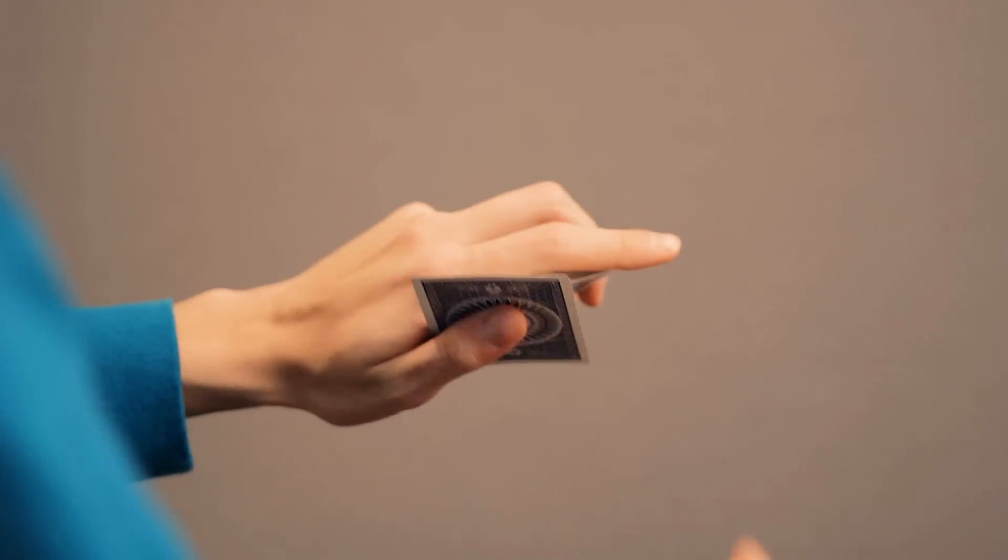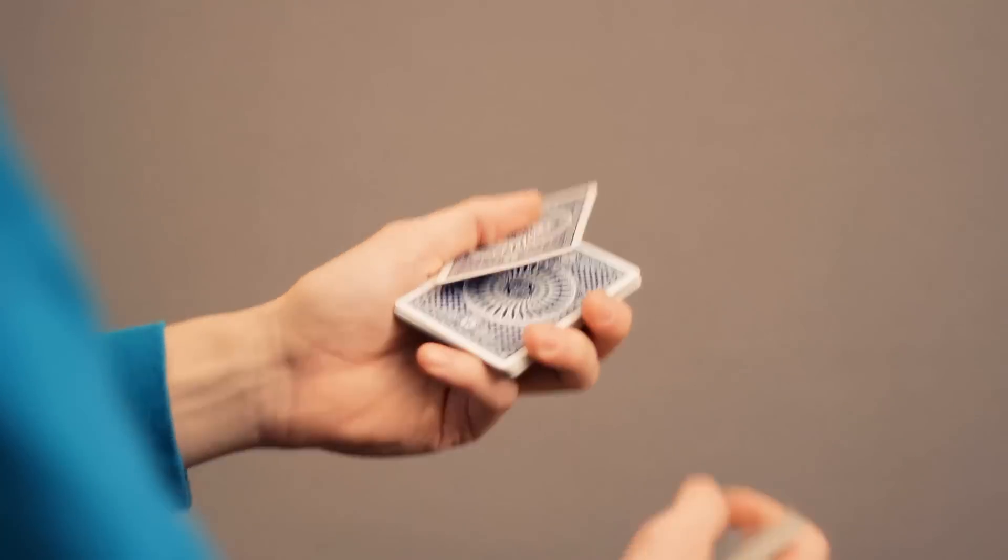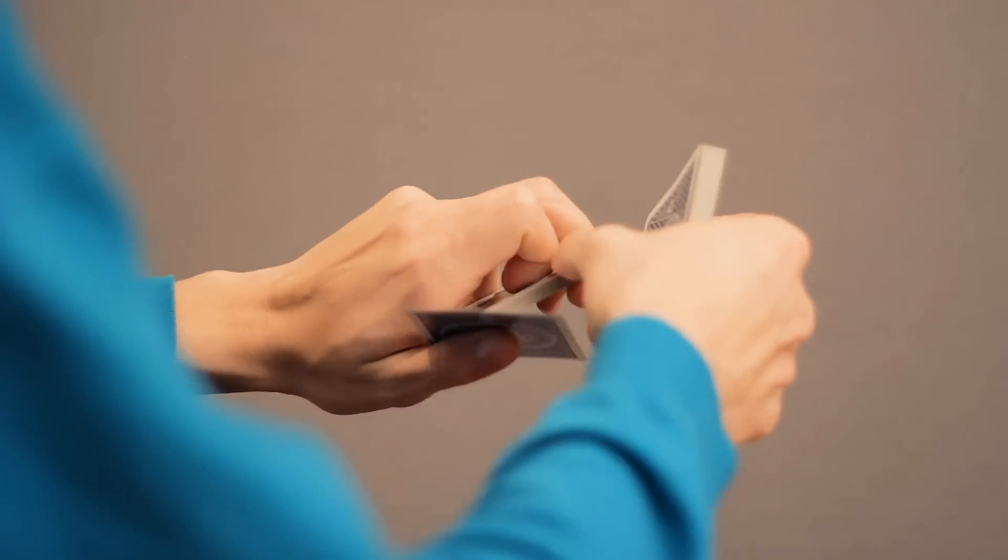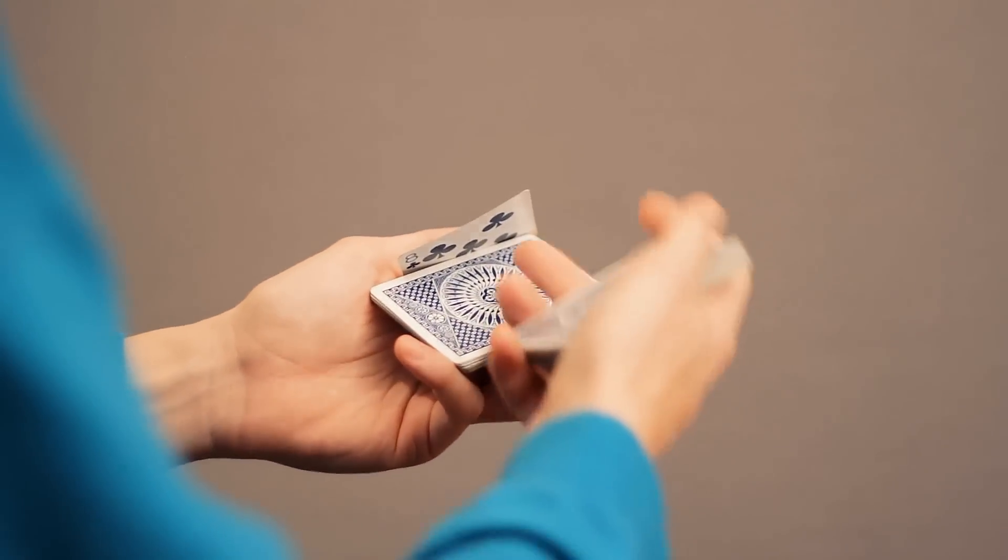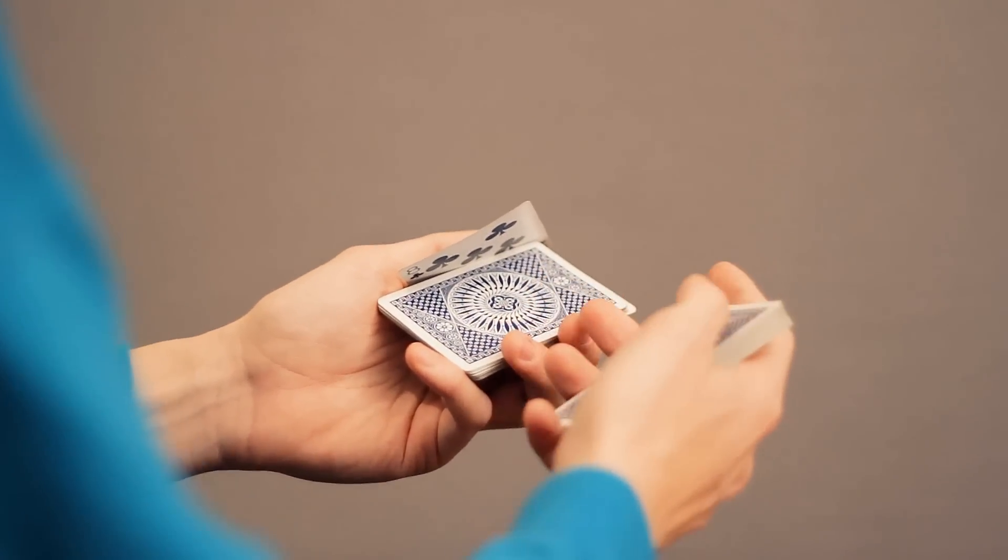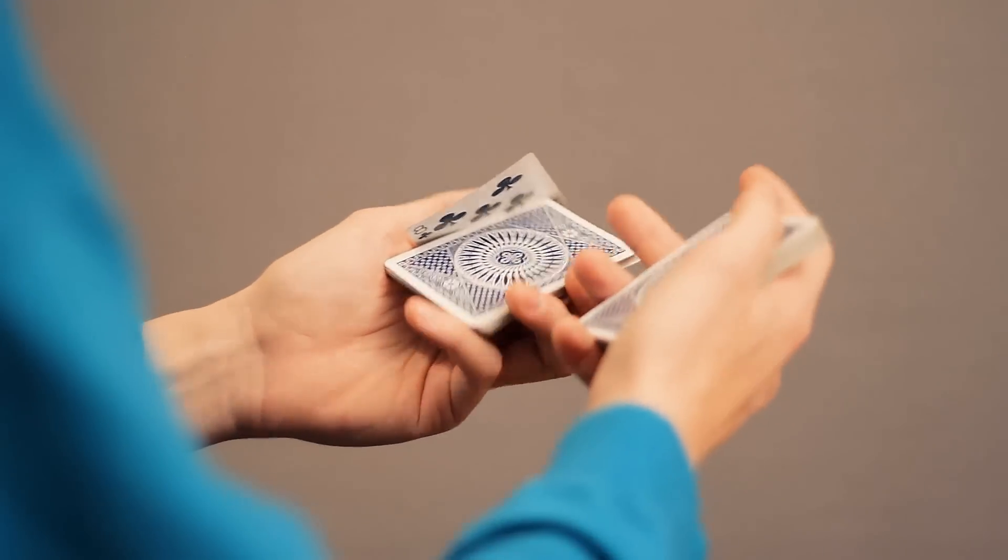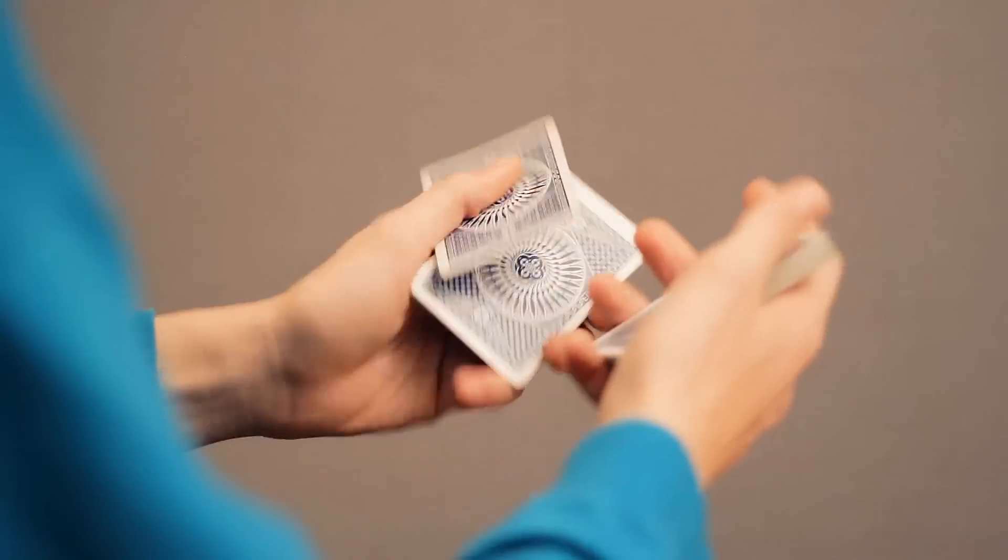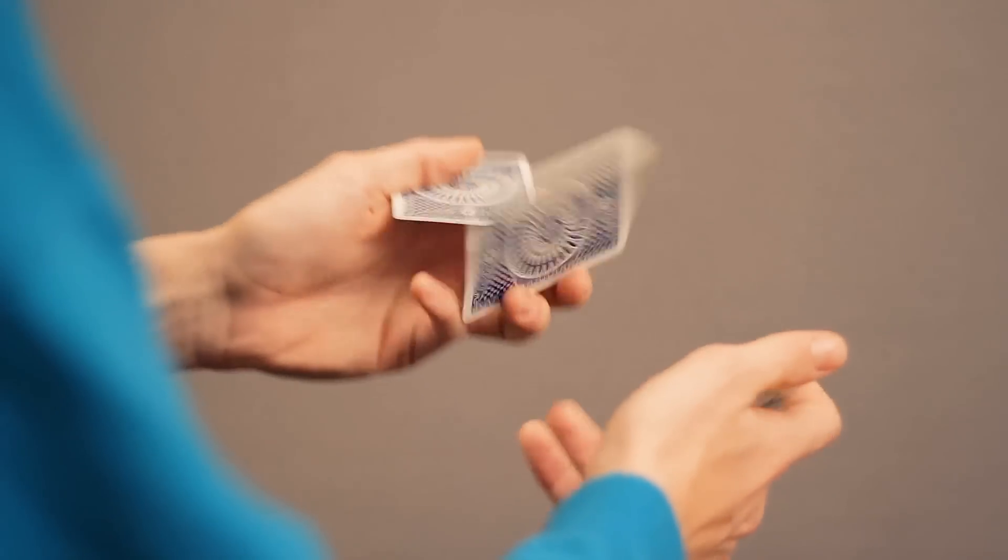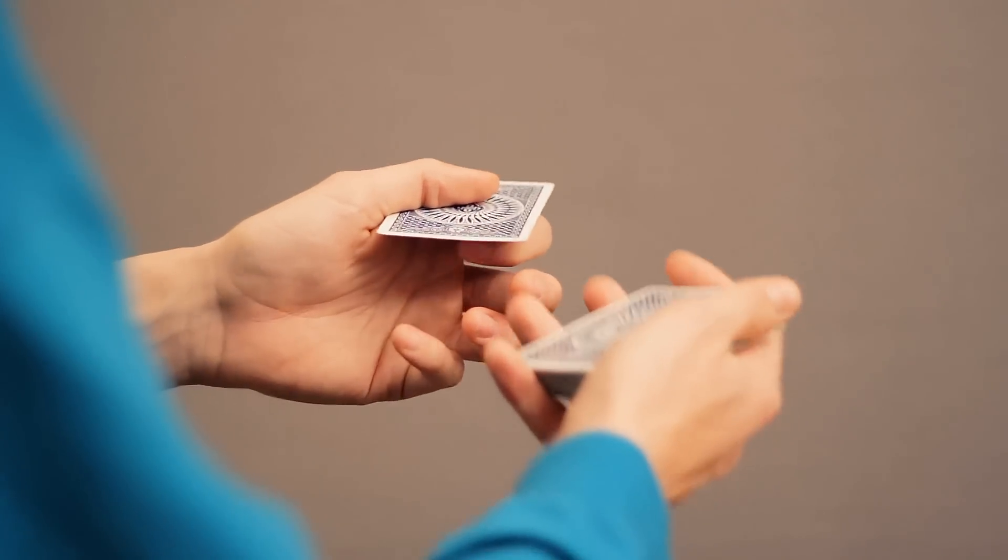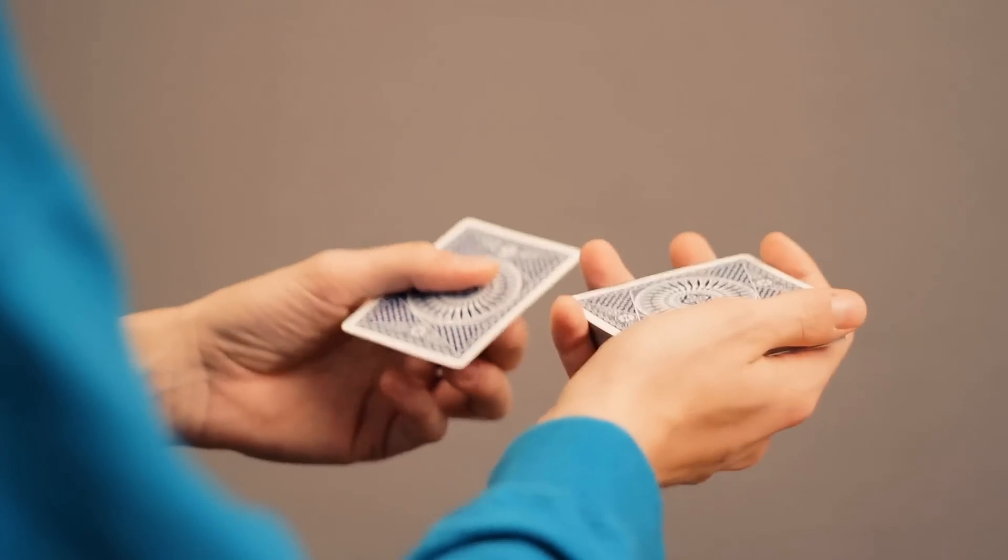Now you're gonna curl your index finger underneath, and the packet is then gonna slide on the single card and then flip around 360 degrees using these two fingers and of course the index finger as well to create some pressure on the packet. And then it's just gonna flip 360 degrees on top of the deck.